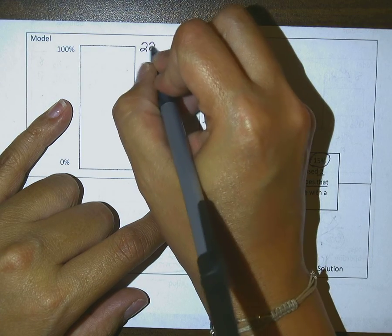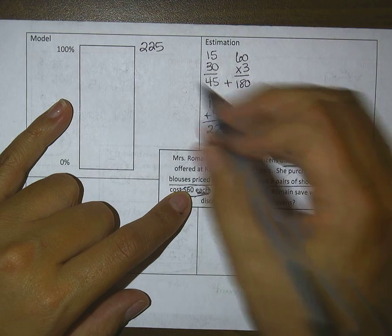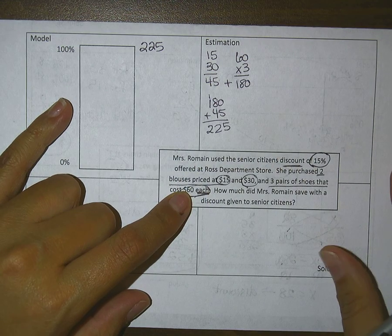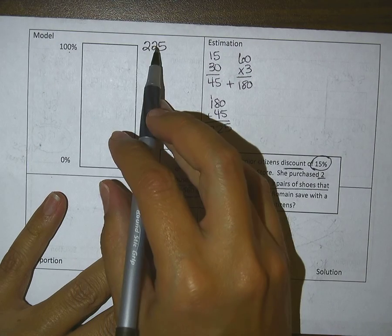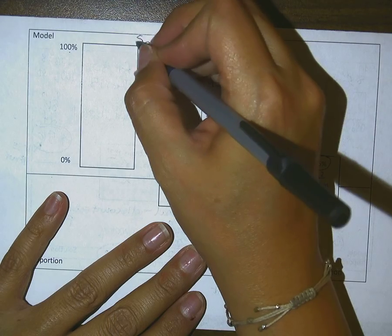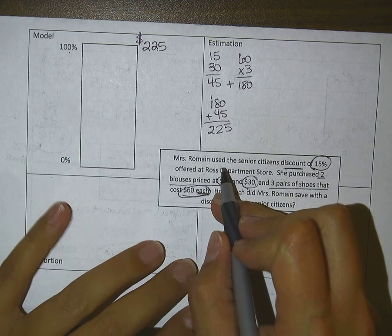I'll keep $225 here. I thought about maybe rounding it to $200, but it might make my answer too different. So my 100%, or the total cost that this lady just spent, is $225.